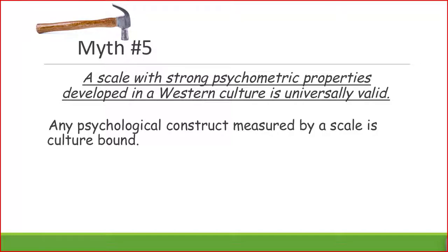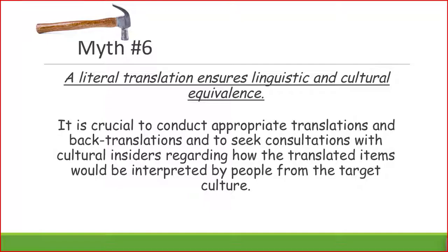Myth number five: a scale with strong psychometric properties developed in a Western culture is universally valid. This is false. Any psychological construct measured by a scale is culture bound, meaning a construct developed within America will not be valid in Asian cultures. Myth number six: a literal translation ensures linguistic and cultural equivalence. It is crucial to conduct appropriate translations and back translations and to seek consultations with cultural insiders regarding how translated items would be interpreted by people from the target culture.